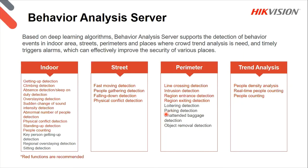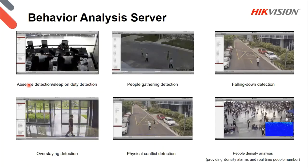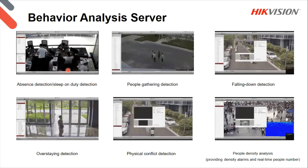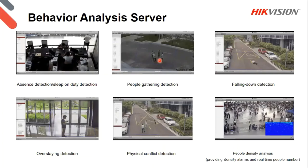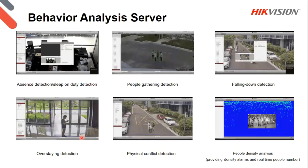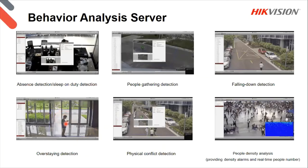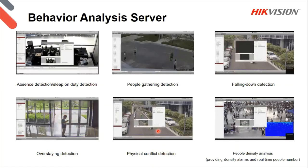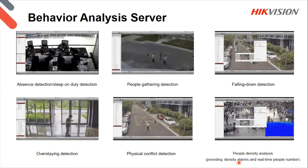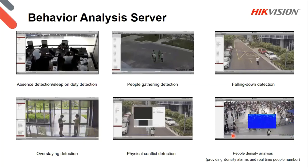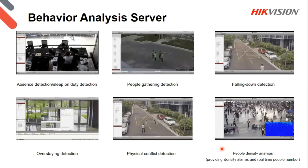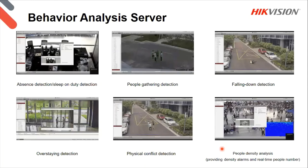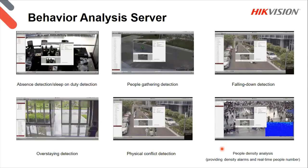Please consider where you can use this at your clients' different kinds of applications. Quick examples shown: absence detection or sleep-on-duty with red triggers shown; people gathering — set areas where a certain number of people gathering triggers an alarm; falling down detection; overstaying — almost like loitering, a person in an area too long; personal conflict — people starting to fight, riots, strikes. People density — providing density alarms and real-time people numbers. Could be used at airports, for strikes, riots, and also for social distancing — if too many people are in a certain area it poses an infection risk. A fantastic machine.